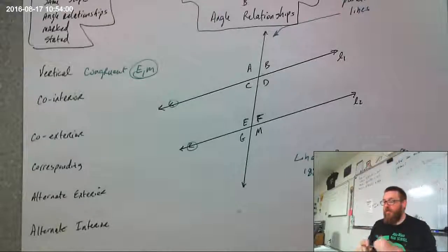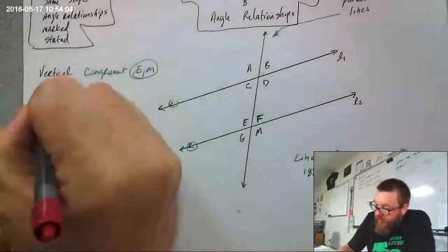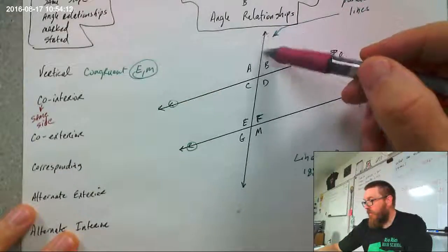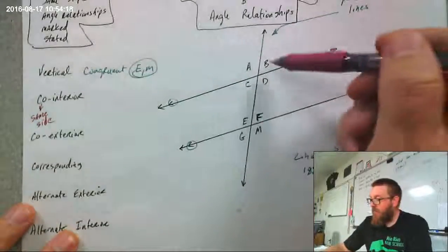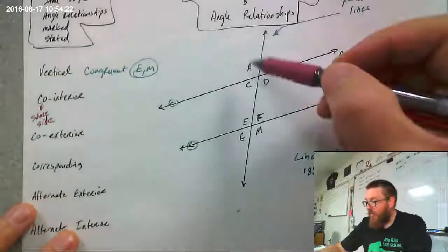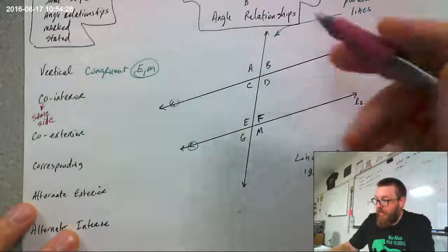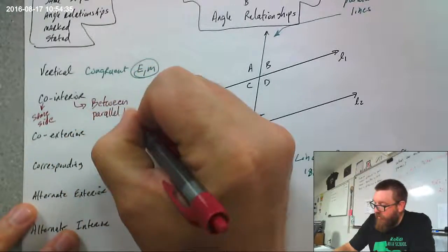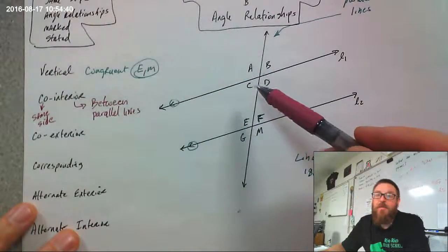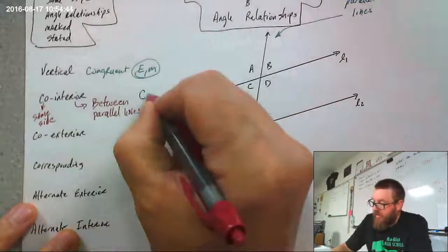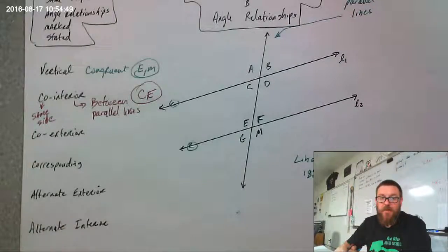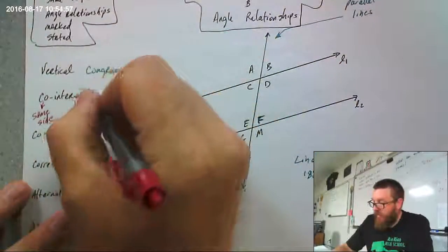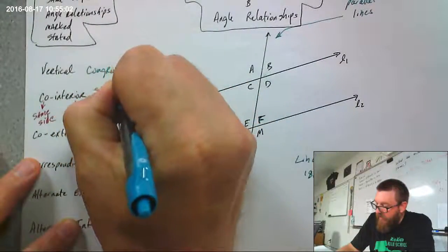Let's talk about co-interior angles. "Co" refers to the same side of the transversal, so co-interior angles will be on the same side of the transversal. A, C, E, and G are all on the left side; B, D, F, and M are all on the right side. "Interior" means in between the parallel lines. So co-interior angles are on the same side of the transversal and in between the parallel lines — C and E would be a pair. Co-interior angles are supplementary, which means they add up to 180.